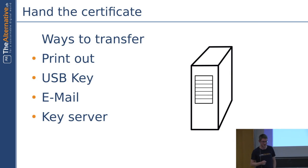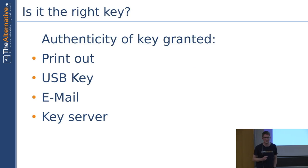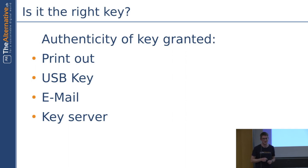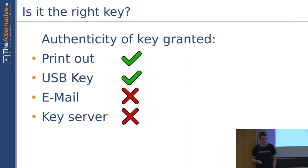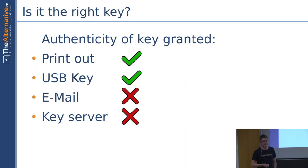How can we be sure whether the authenticity of the key is granted? The authenticity of the key means that the key we have on our local drive from the other person is really the key of the person which has the name on it. In the practice part you'll see you can write any name you want on the key and you can't be sure about whether it's really the person you want to talk to. The easiest way is to control the entire transfer path from the source to the destination — for the printout and the USB key, if you hand them over in person it's safe, while the email and the key server approaches are not. An attacker could exchange the email attachment with their own public key, and on the key server anybody can upload keys and you don't know which one to choose.